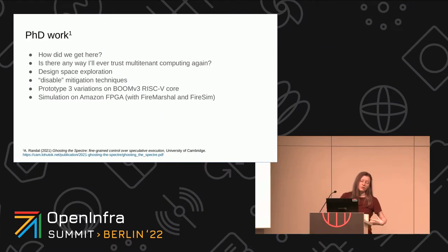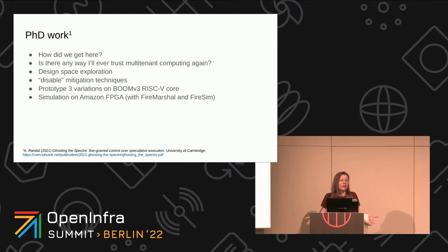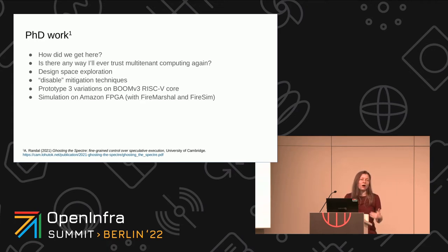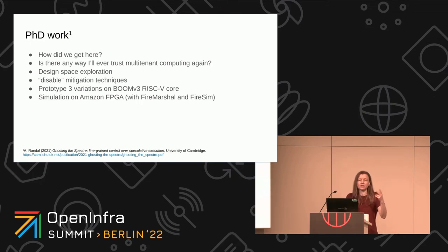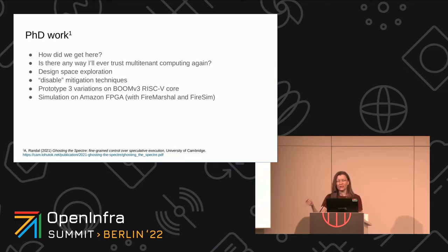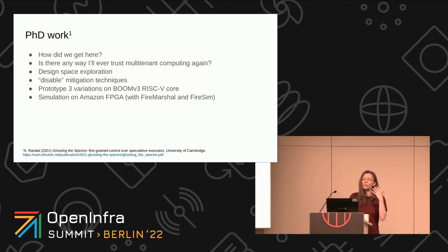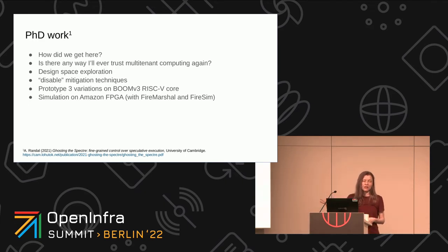I started my PhD work with two questions. One was: how did we get here? We've been doing speculative execution since the 70s — how did we get to a point where our hardware is so completely undermining our software security and nobody noticed? The next question was: is there any way I'll ever trust multi-tenant computing again — cloud and containers — because I now know this? It's kind of like being the cook: you know what went into the food, and sometimes you don't want to know. My work was design space exploration mainly around those disable-mitigation techniques.